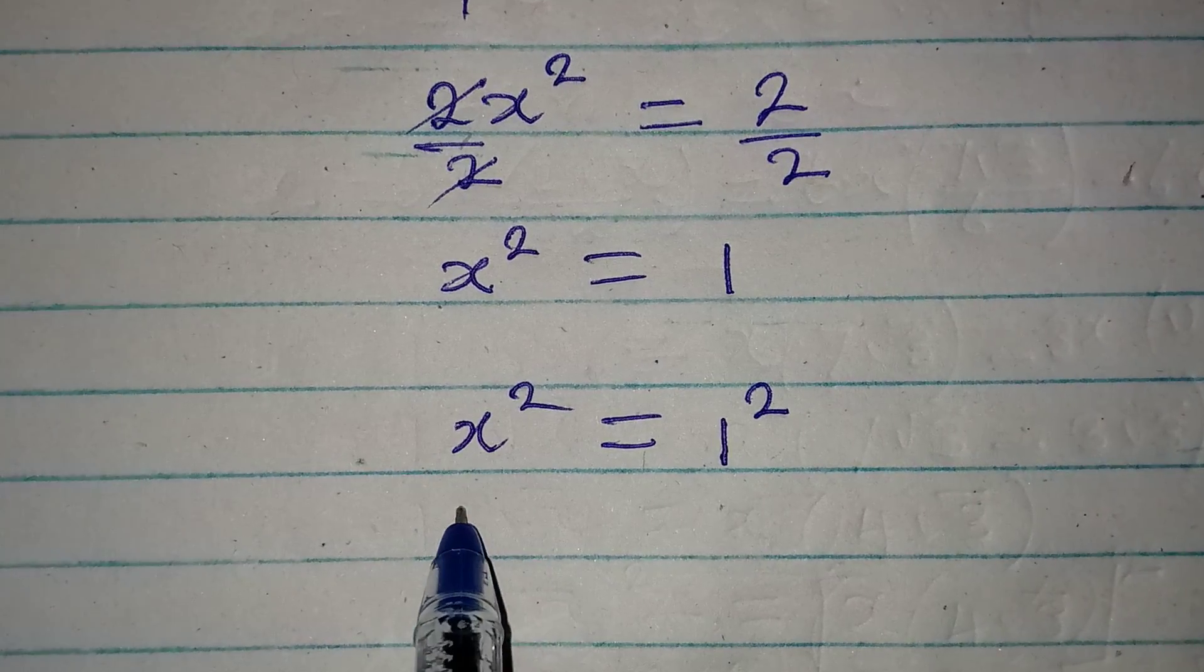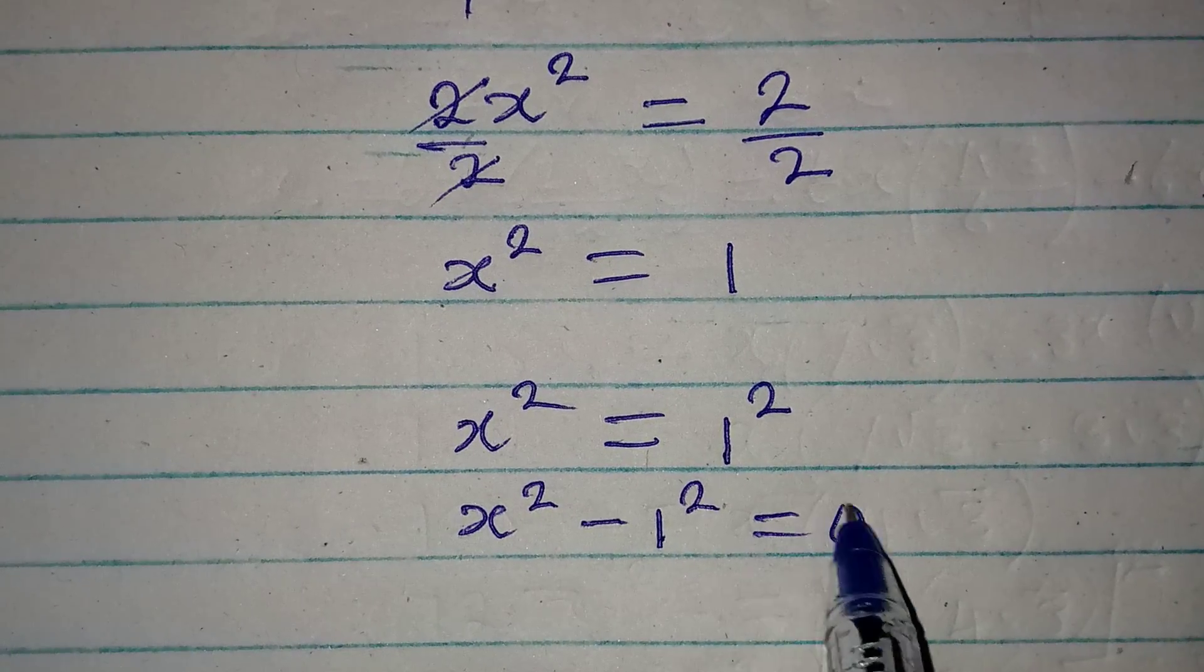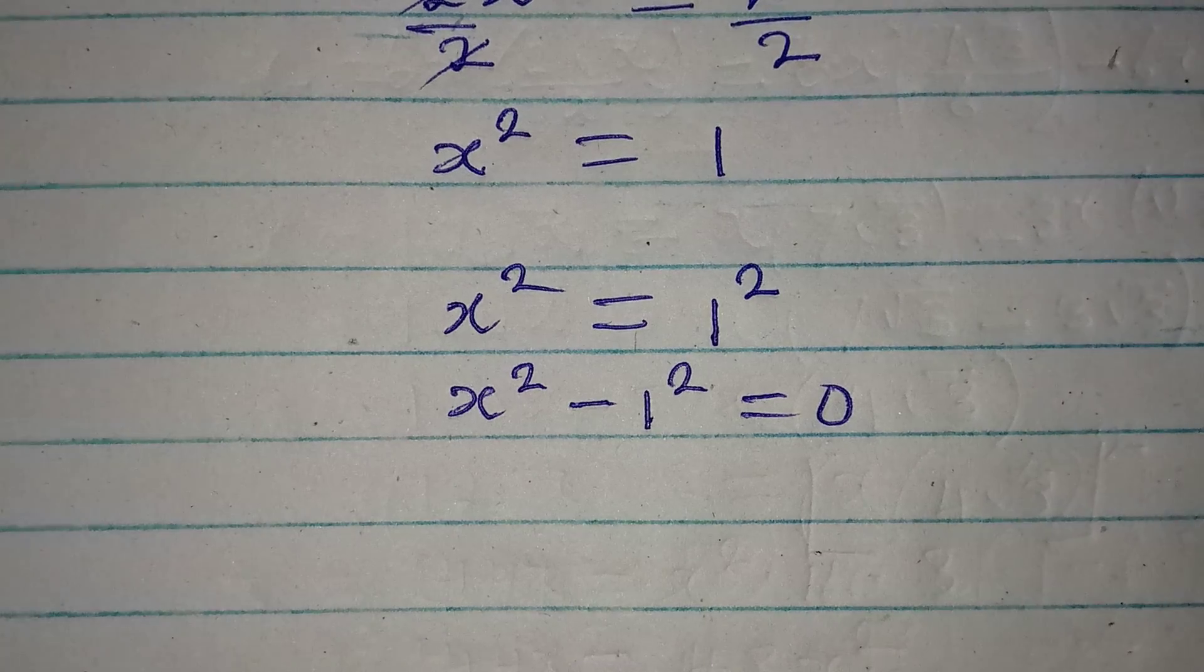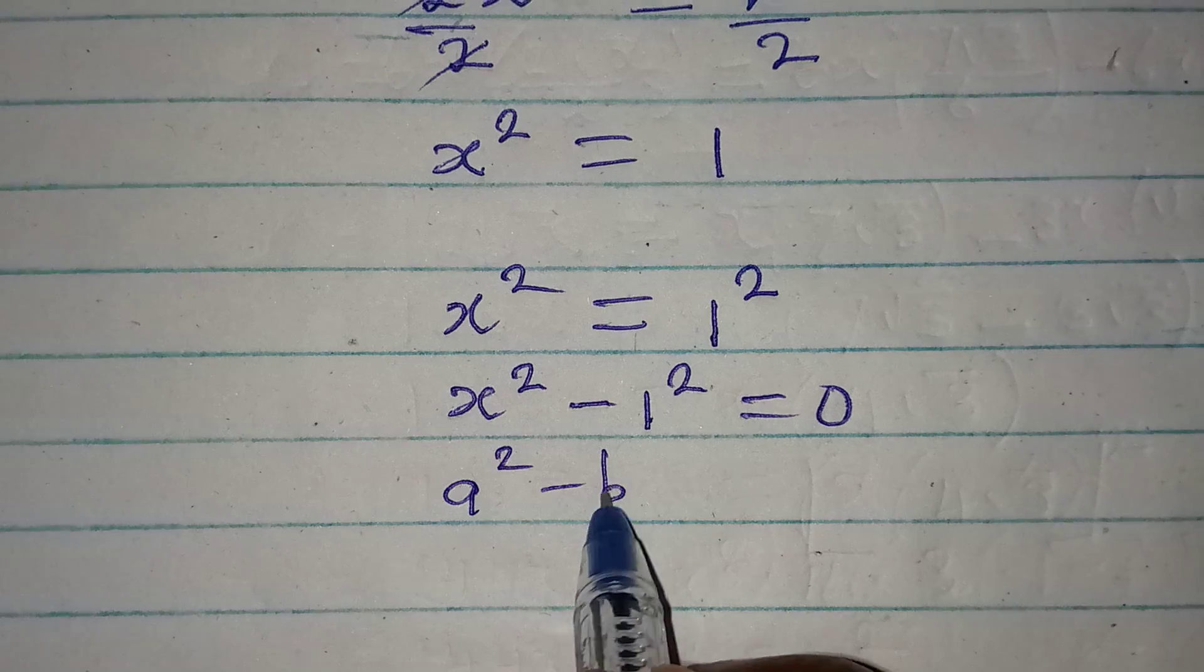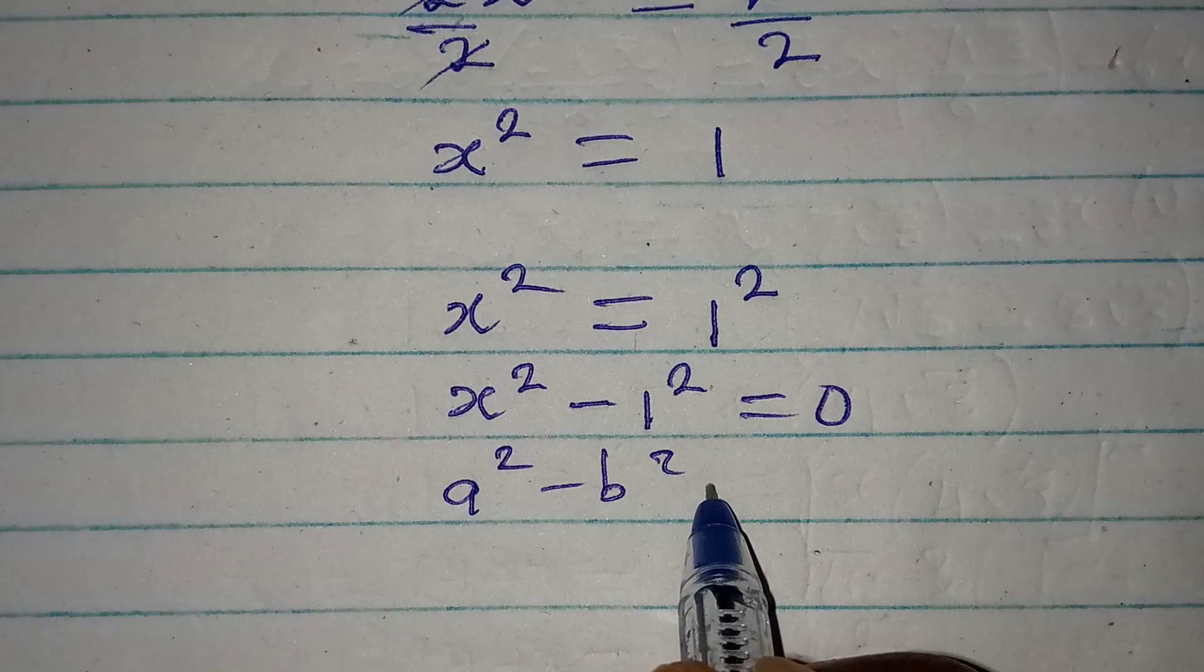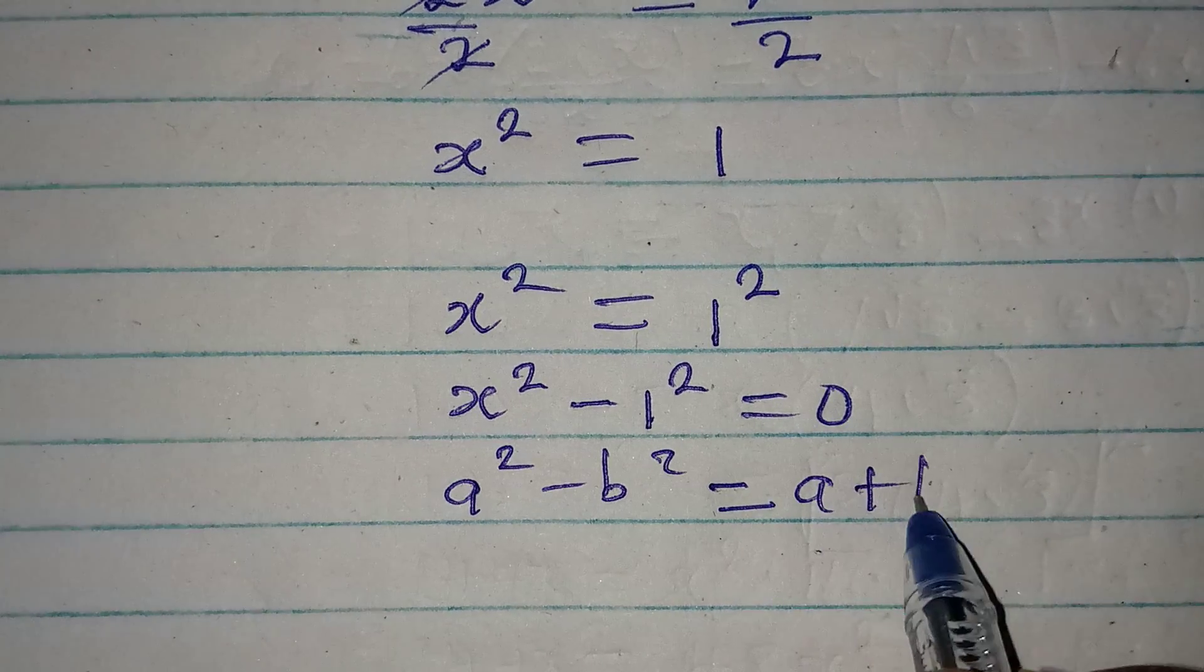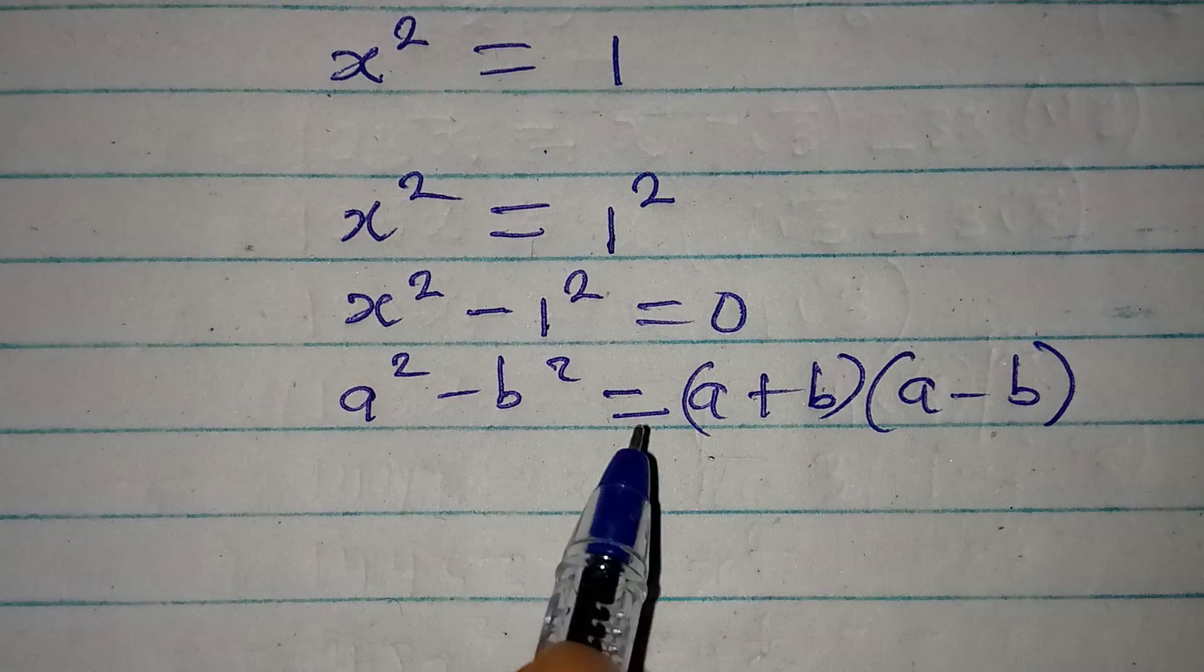Now the reason I'm using this method is because I want to use difference of two squares. Bring this to the left so we have x² - 1² which is equal to 0. Then apply your difference of two squares, and it says that a² - b² is equal to (a+b)(a-b).